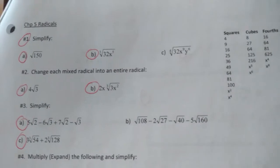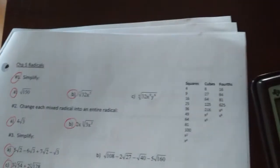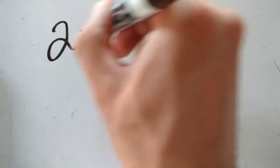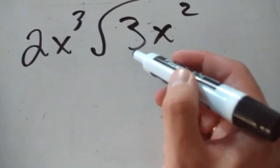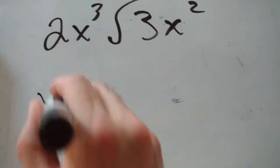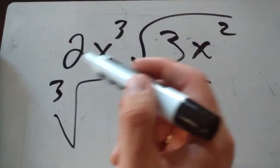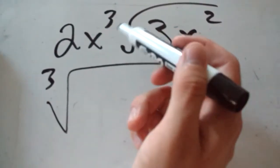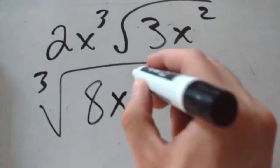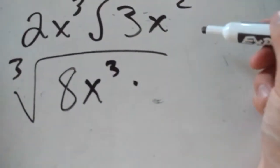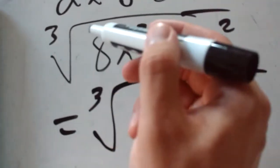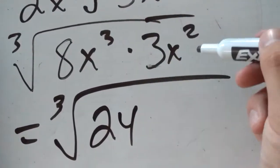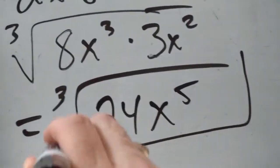For 2b, we have 2x times the cube root of 3x squared. Same approach, but we cube the coefficient since it's a cube root. 2x cubed is 2 cubed times x cubed, which is 8x cubed. Multiply that by the radicand 3x squared: 8 times 3 is 24, and x cubed times x squared is x to the fifth. Final answer: cube root of 24x to the fifth.